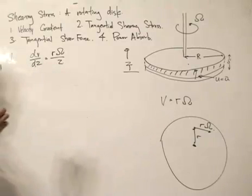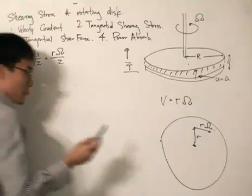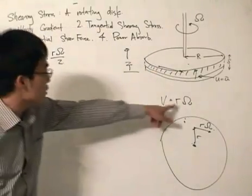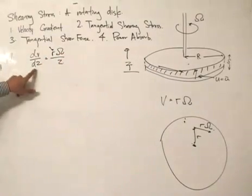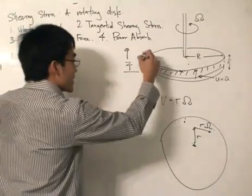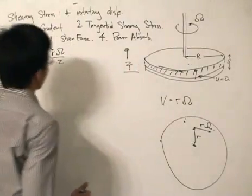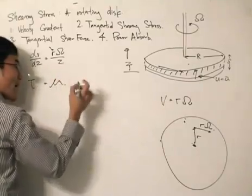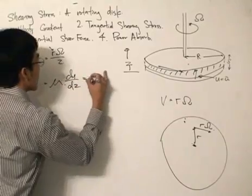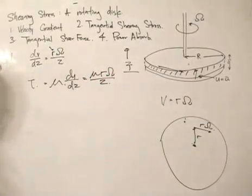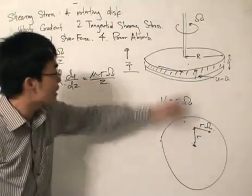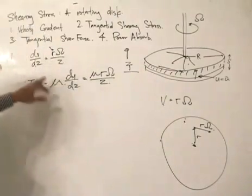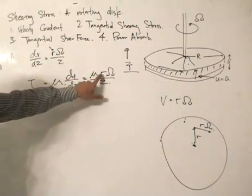I want to point out that the velocity gradient is dependent on r. If we move further away from the center, the velocity at the top increases according to this equation. Z is a constant because it is the fixed film thickness. Now, the tangential shearing stress tau is given by mu multiplied by the velocity gradient, which gives us tau equals mu·r·omega divided by Z. The shearing stress is dependent on r, so it will be different at different points on the disc as r increases.